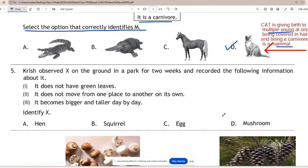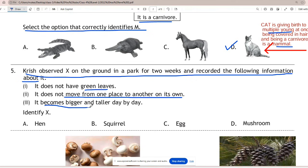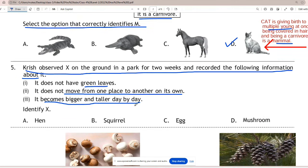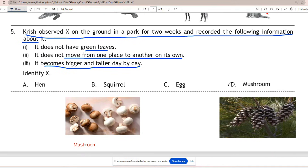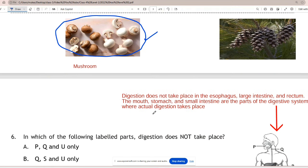Question 5: Krish observed X on the ground in a park for 2 weeks and recorded the following information about it. It does not have green leaves, it does not move from one place to another on its own, it becomes bigger and taller day by day. Identify X. The correct answer is D - mushroom. Because it doesn't have green leaves, it doesn't move from one place to another on its own, and it became bigger and taller day by day.